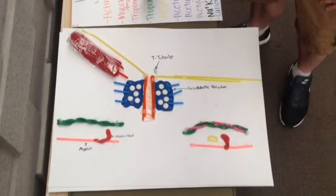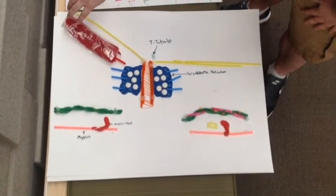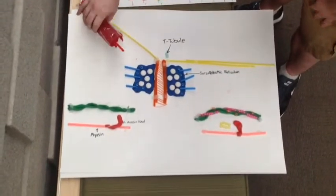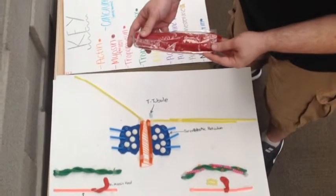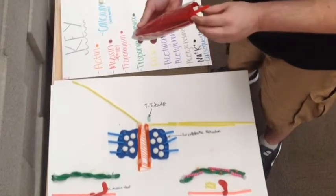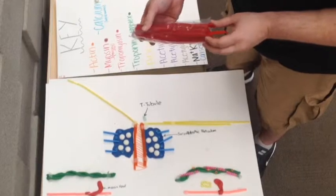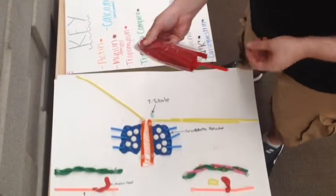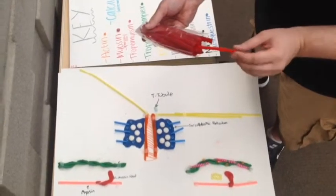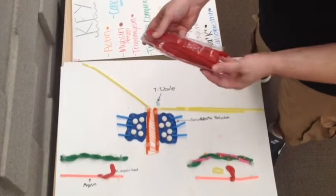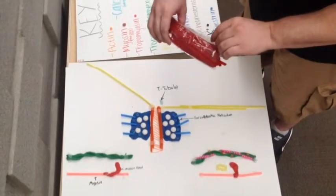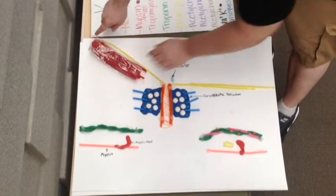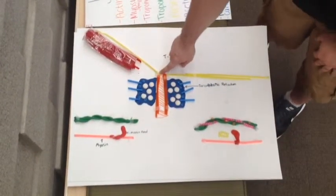After the action potential is generated by the sodium ions, it travels down the sarcolemma, which is basically the membrane of the muscle cell. Here we have what we would call a fascicle. A fascicle is made up of many different myofilaments or myofibers. Myofibers are what make up the muscles, and each myofiber is also made up of a myofibril. All of these together make up a fascicle, and each fascicle is surrounded by the sarcolemma, which is the cell membrane of the muscle cell. The action potential travels down the sarcolemma and enters into a T-tubule.